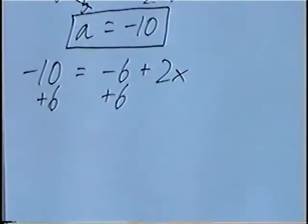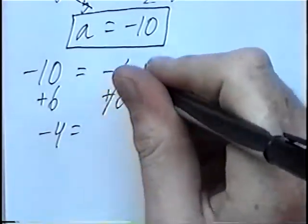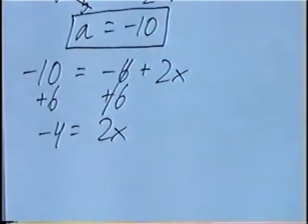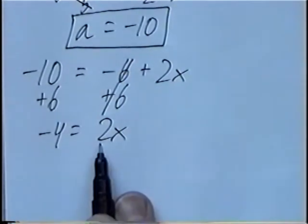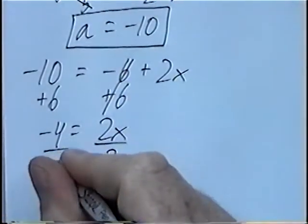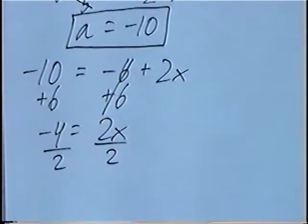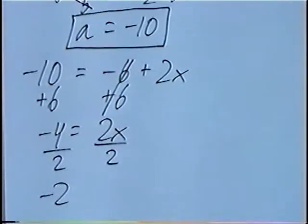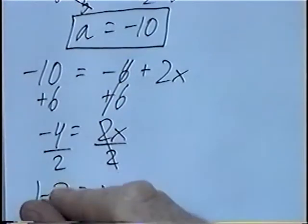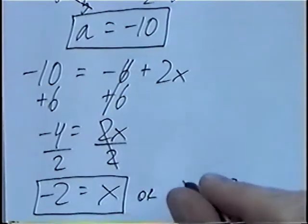Negative 10 plus 6 would be negative 4. Negative 6 plus 6 would cancel, and the 2x would stay the same. Last step to get x by itself, we have 2 times x. The opposite of multiplying by 2 is dividing by 2. Negative 4 divided by 2 would be negative 2. The 2's will cancel, and we'll have the answer negative 2 equals x. Or if you want to, you can rewrite it, x equals negative 2.